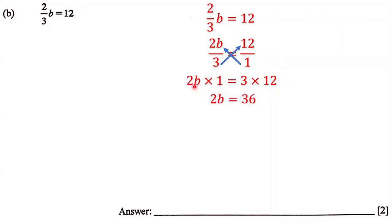So 2b times 1 is 2b and 3 times 12 is 36. Now we're going to divide both sides of this linear equation by the coefficient of b which is 2.